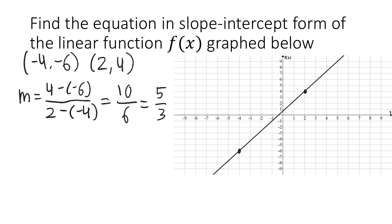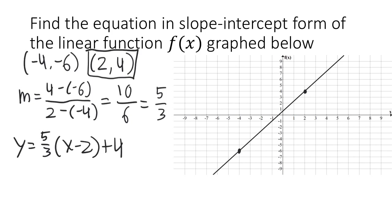Now we apply the point-slope form: y equals 5 over 3 times (x minus x1) plus y1. We can choose either point — I will choose 2 comma 4. So inside the parentheses we'll have x minus 2, plus 4. This is the point-slope form of the line, but we are asked to find the slope-intercept form, which is y equals mx plus b. So we need to convert by using the distributive property and distributing the 5 thirds inside the parentheses.